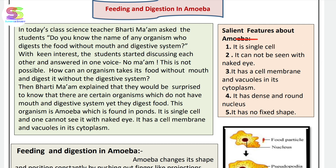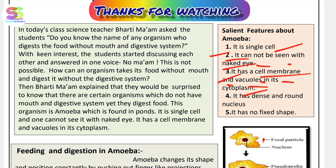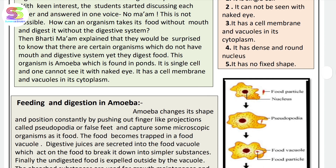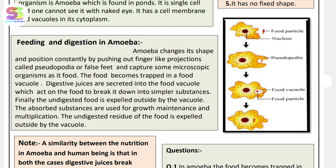According to the salient features of amoeba: it is a single cell, it cannot be seen with the naked eye, it has a cell membrane and vacuoles, it has a round nucleus, and it has no fixed shape.